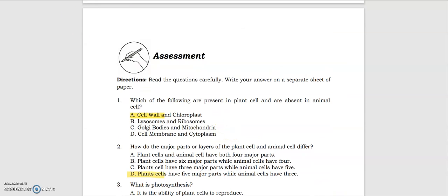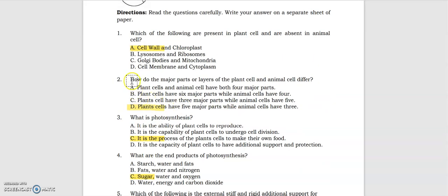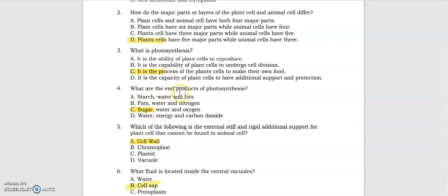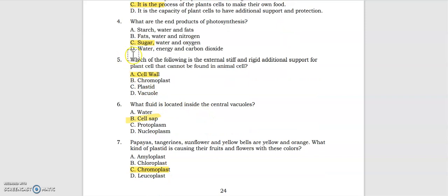For the assessment, number one: which of the following are present in plant cell and are absent in animal cell? We have the cell wall and chloroplast. Number two: how do the major parts or layers of the plant cell and animal cell differ? The answer is plant cells have five major parts while animal cells have three. Number three: what is photosynthesis? It is the process of the plant cells to make their own food, that's letter C. Number four: what are the end products of photosynthesis? The answer is letter C, sugar, water and oxygen. Number five: which of the following is the external stiff and rigid additional support for plant cell that cannot be found in animal cell? The answer is the cell wall.